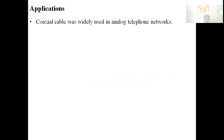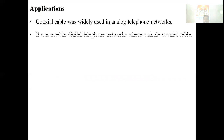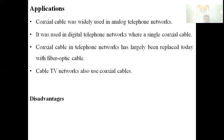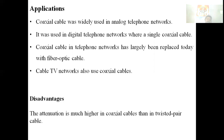Coaxial cable was used in analog and digital telephone networks, but has largely been replaced by fiber optic cable. Cable TV networks also use coaxial cable. A disadvantage of coaxial cable is that attenuation is much higher in coaxial cable than in twisted pair cable.